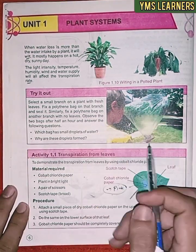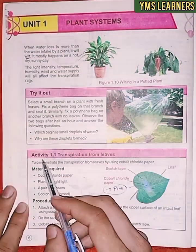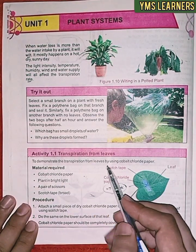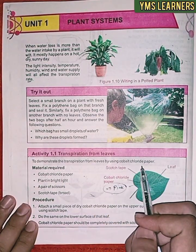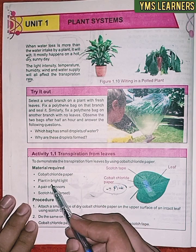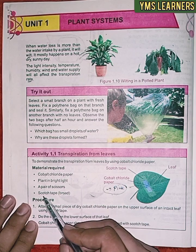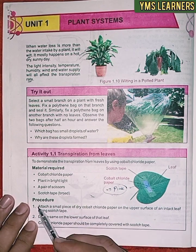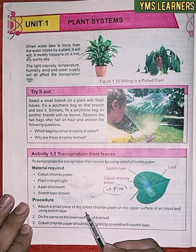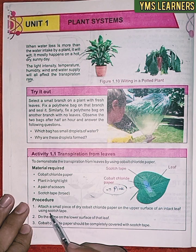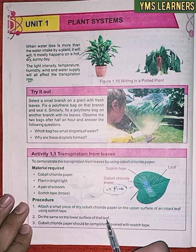The first experiment is to demonstrate transpiration from leaves using cobalt chloride paper. Materials required: cobalt chloride paper, a plant in bright light, a pair of scissors, and scotch tape. The procedure is to attach a small piece of dry cobalt chloride paper on the upper surface of an intact leaf using scotch tape. Do the same on the lower surface of that leaf.